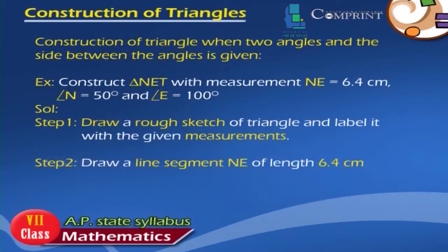Construction of triangle when two angles and the side between the angles is given. Example: Construct triangle NET with measurements NE equal to 6.4 cm, angle N equal to 50 degrees, and angle E equal to 100 degrees.